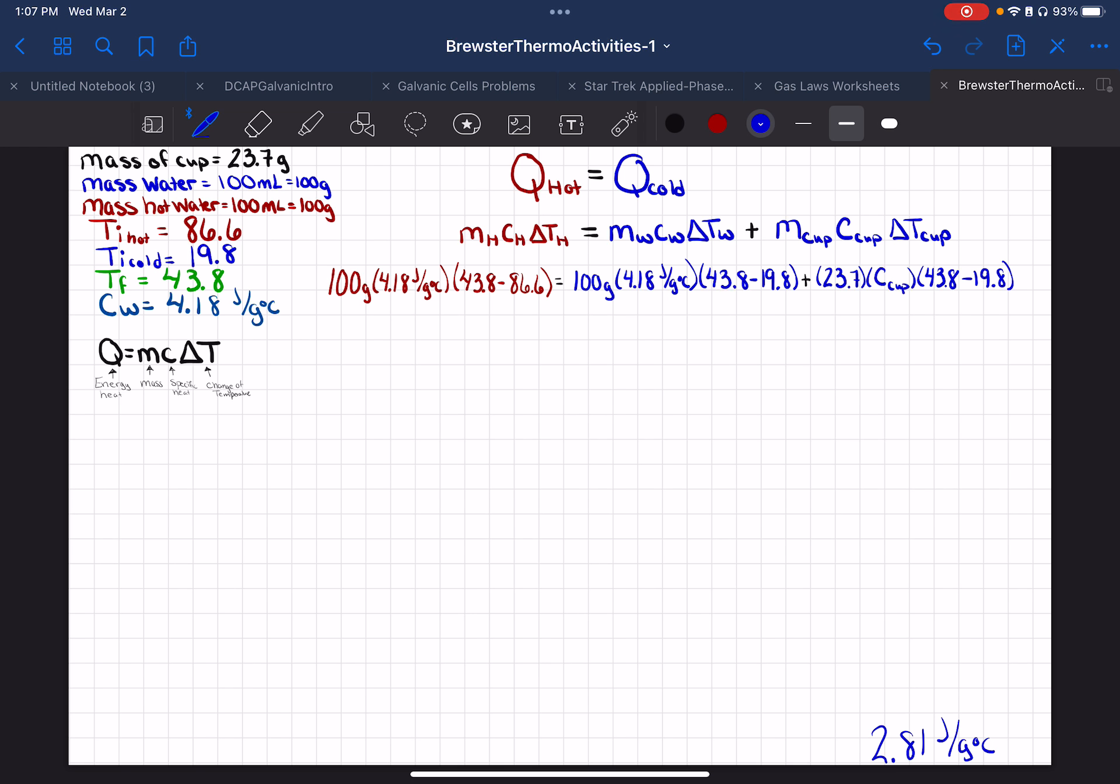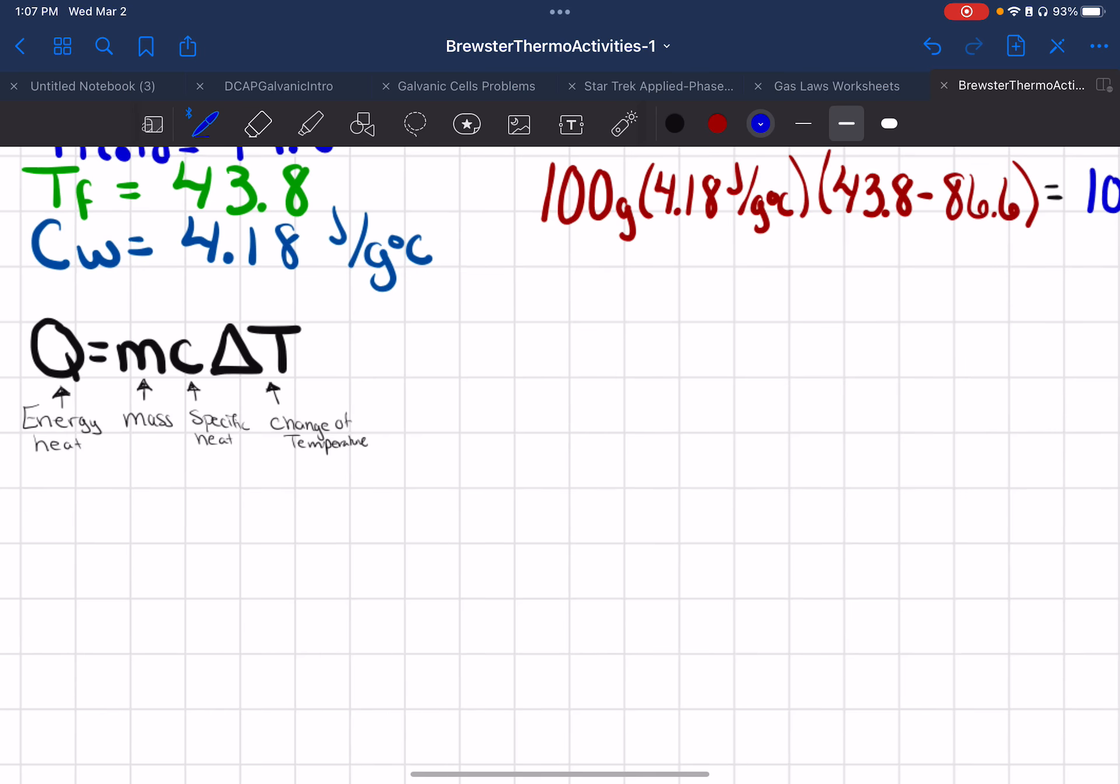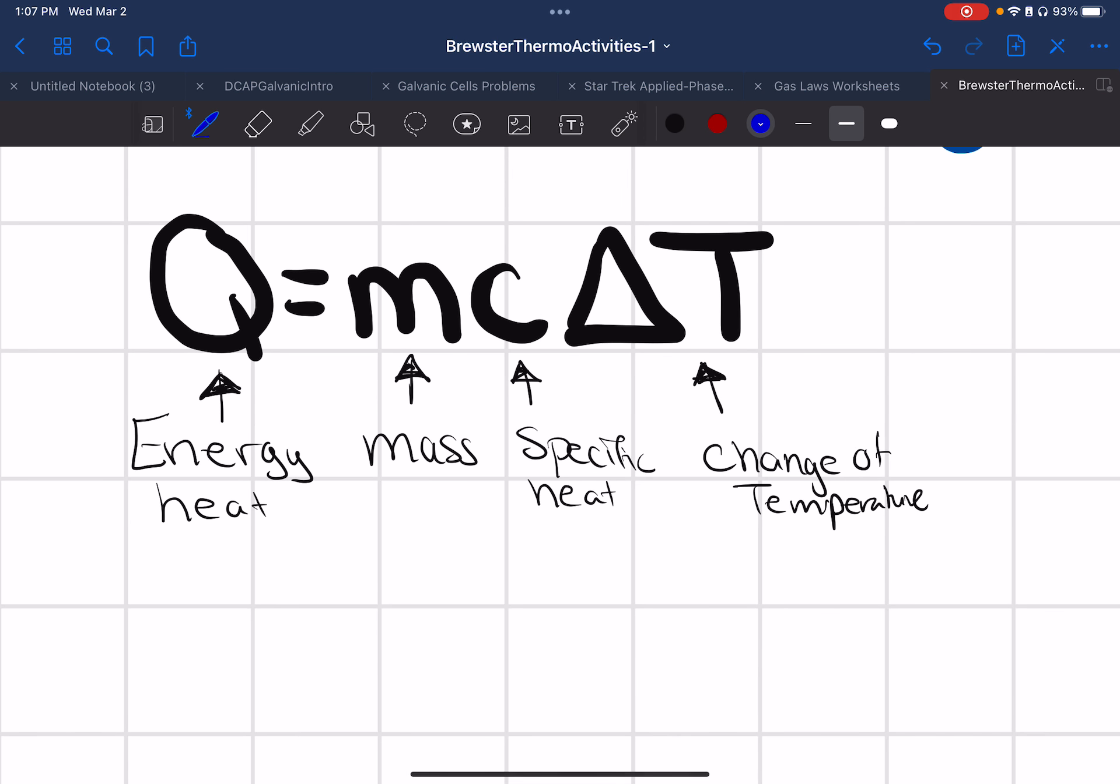Okay, so the first thing is we are going off of this equation here, Q equals mc delta T. Q is energy or heat energy. The units for that will be joules. Mass, generally we're always going to be working with grams. C is specific heat, and that's going to be joules per gram degrees Celsius. And then your change temperature for this unit can be degrees Celsius.